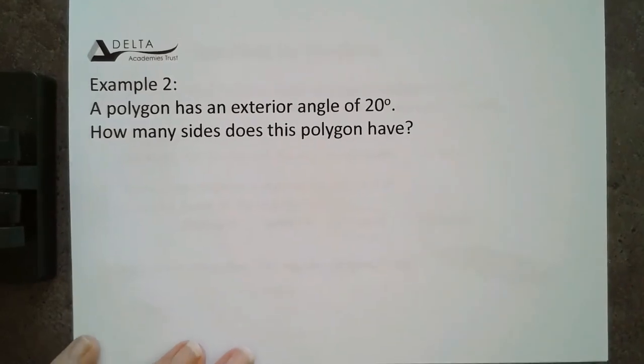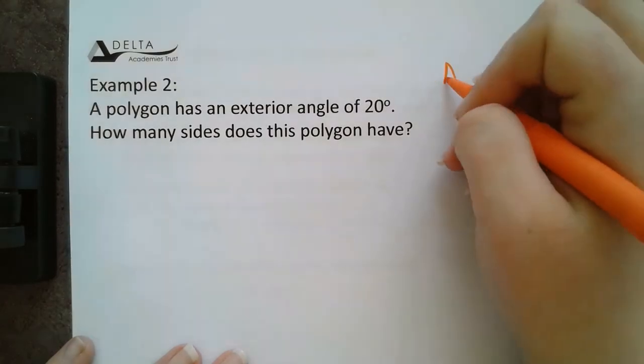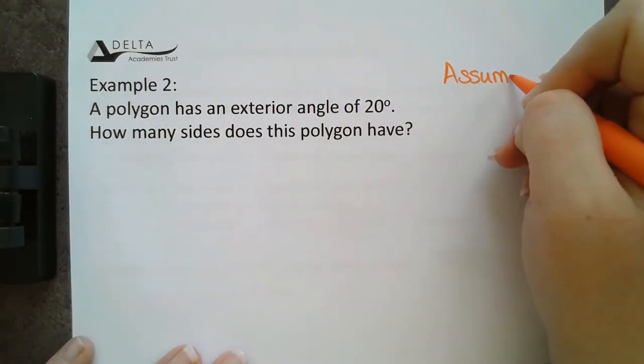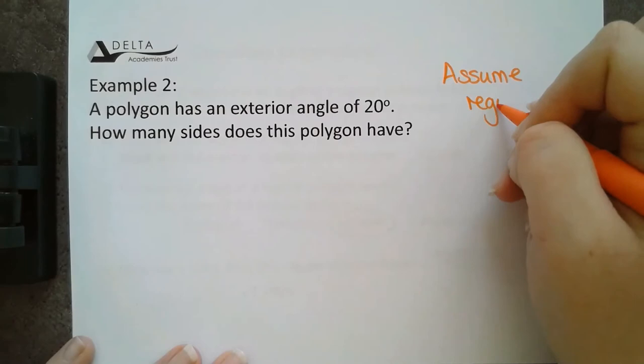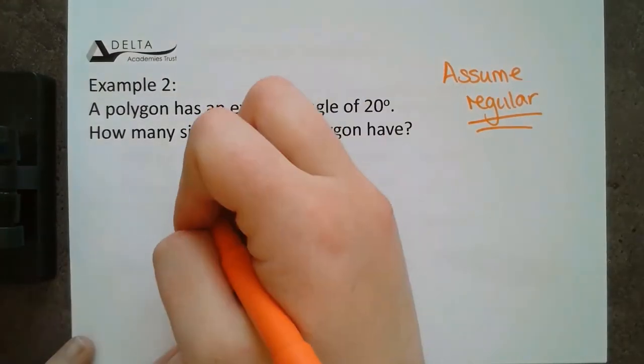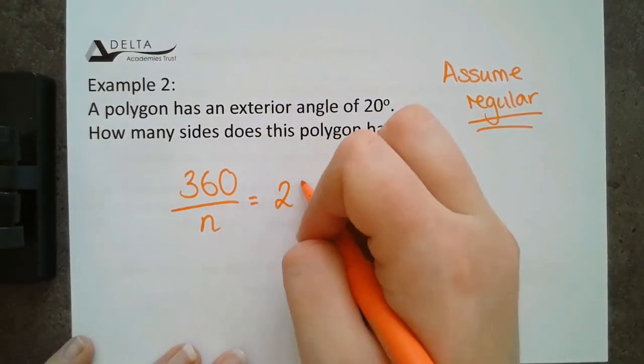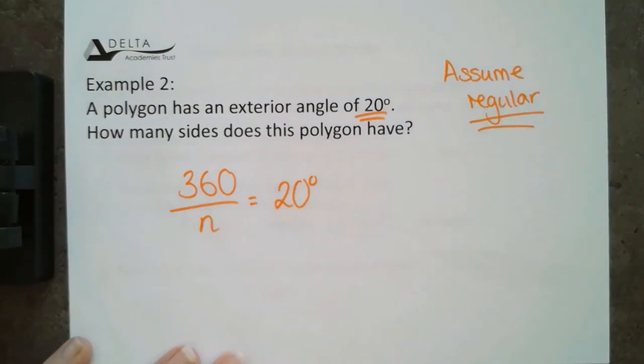What we're going to do is learn how to work backwards. So, a polygon has got an exterior angle of 20. How many sides does this polygon have? Now, there's a lot of possible answers for this. So, what we're going to do is we're going to assume that it's regular. If we assume that it's regular, that means that 360 divided by N is going to give us 20, that exterior angle that we were given before.